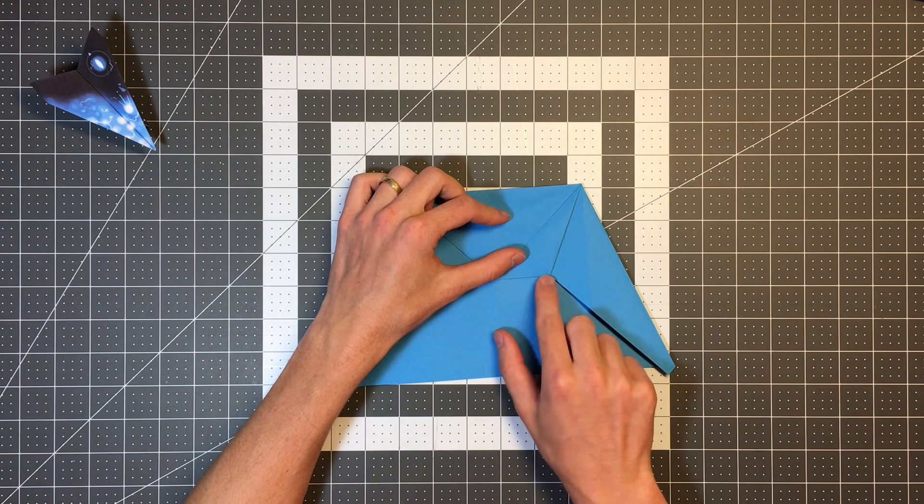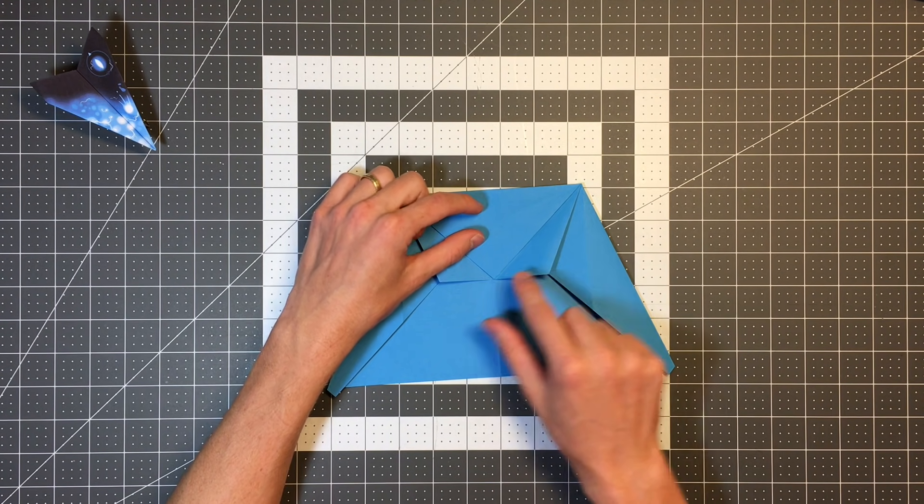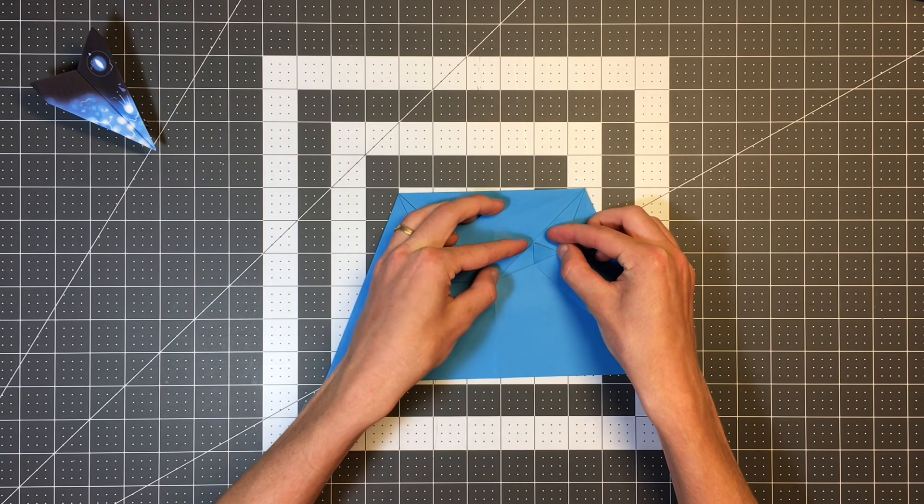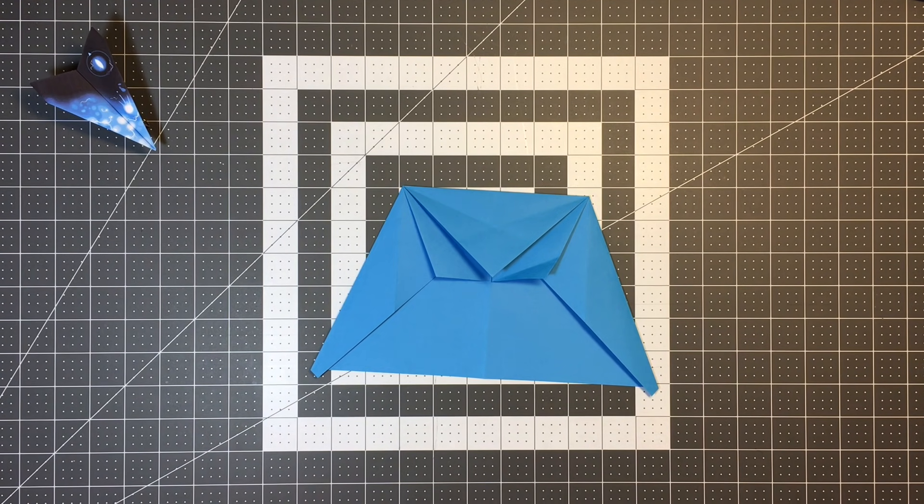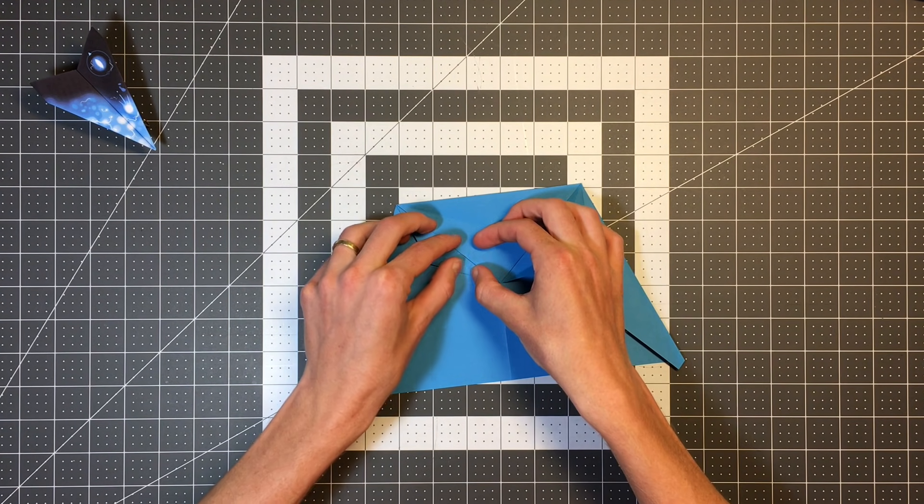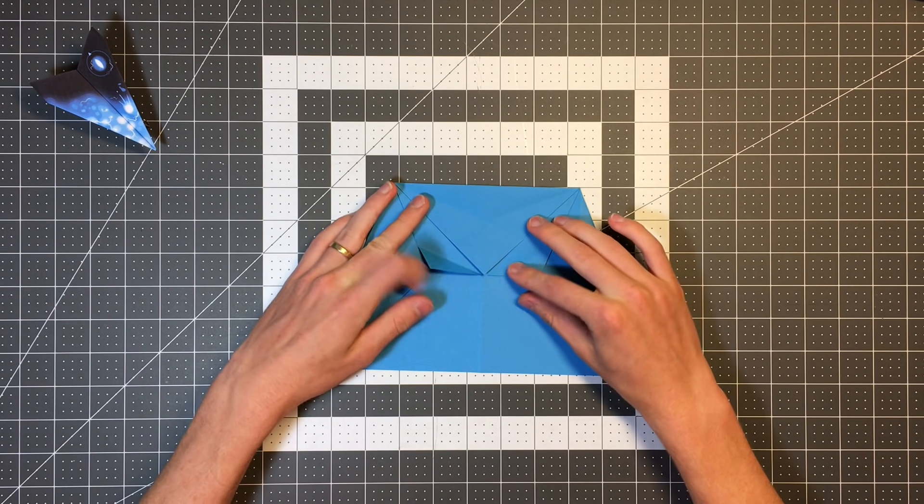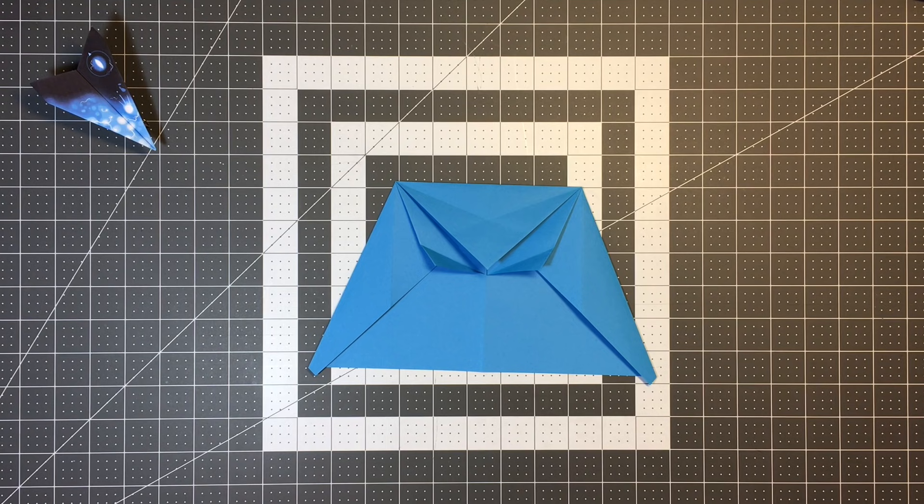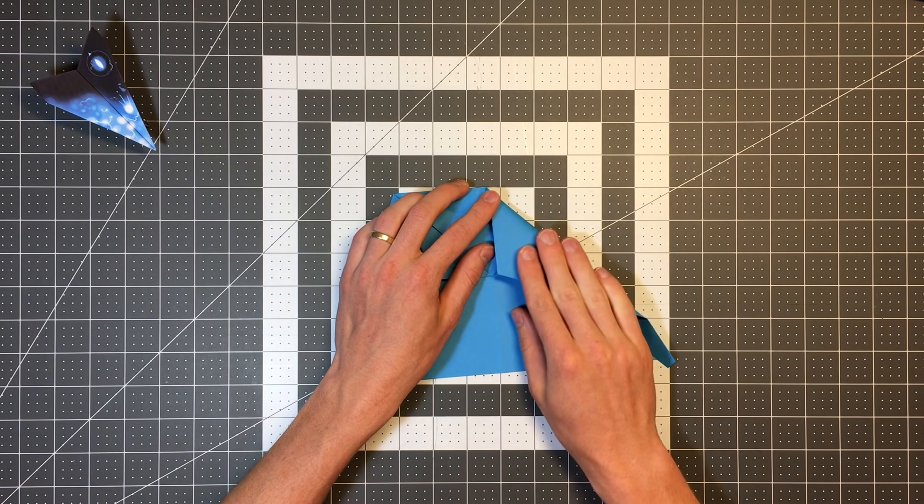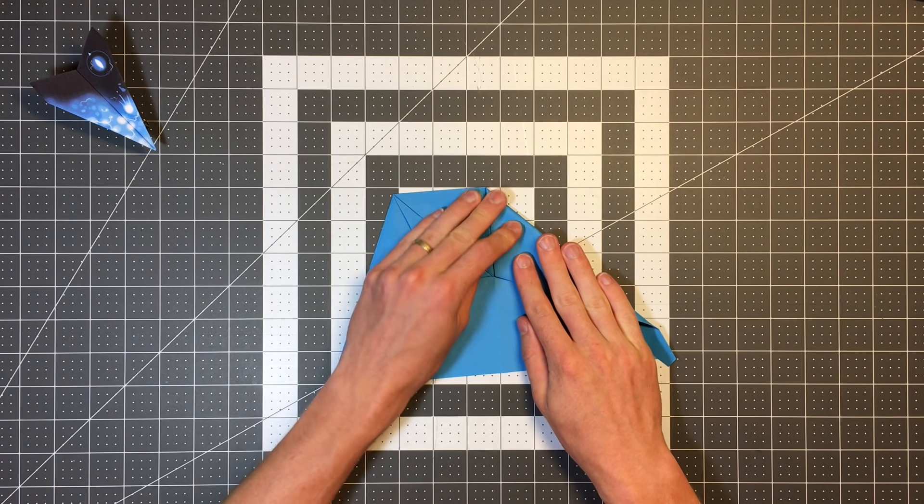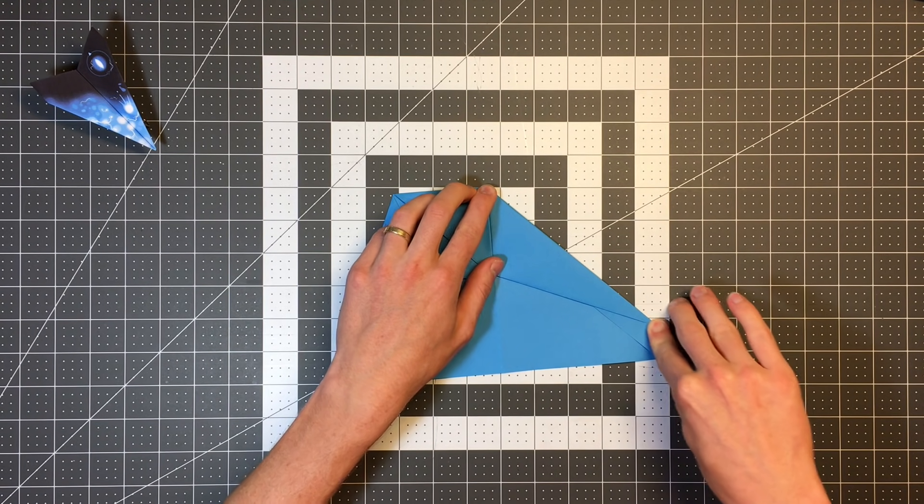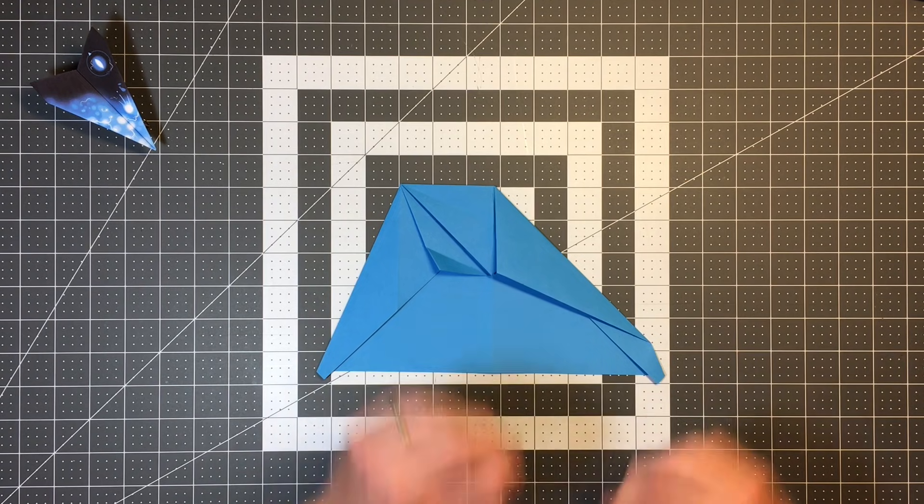Now I'm going to take this short edge here and fold it to this diagonal edge right there. This is forming a tab that will help lock the plane together in a few steps. I'll do the same thing on this side.